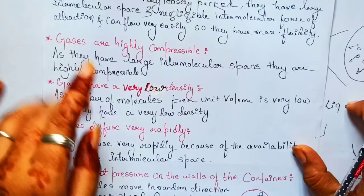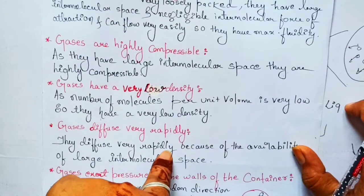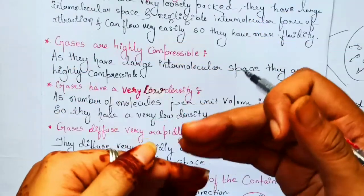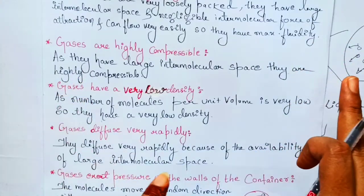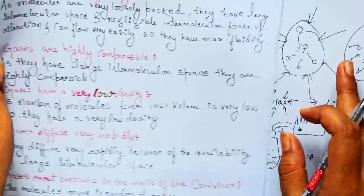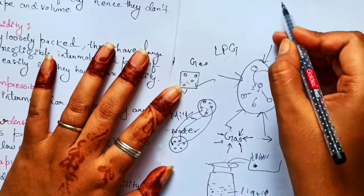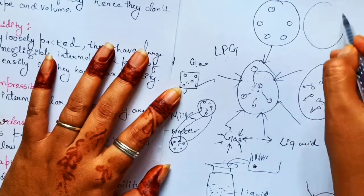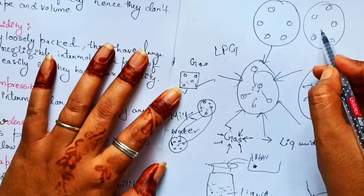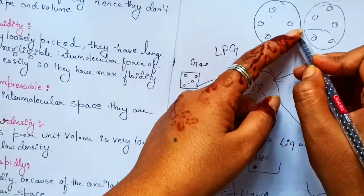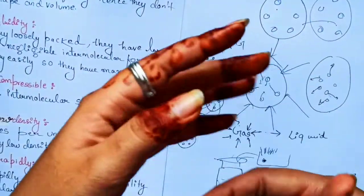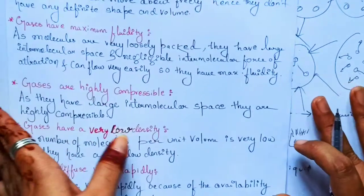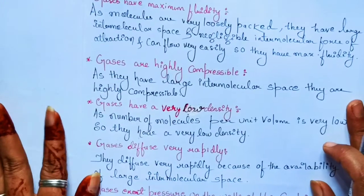Gases diffuse very easily. The reason is that gases have large intermolecular space. If we mix one gas with another gas, both gases have a lot of space between their molecules, so the molecules of one gas can easily move into the intermolecular spaces of the other gas. This is why gases can diffuse very easily.